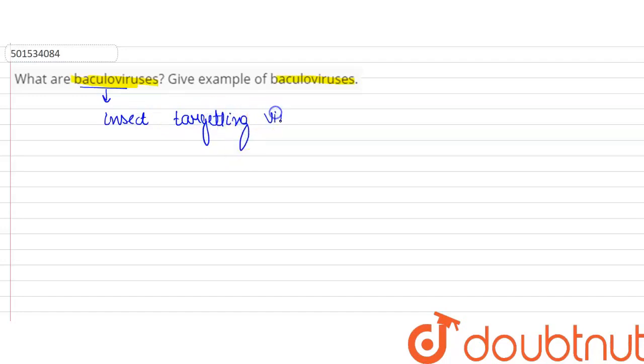Baculovirus is a virus that targets insects. They are pathogenic for insects. Insects, they are pathogenic.